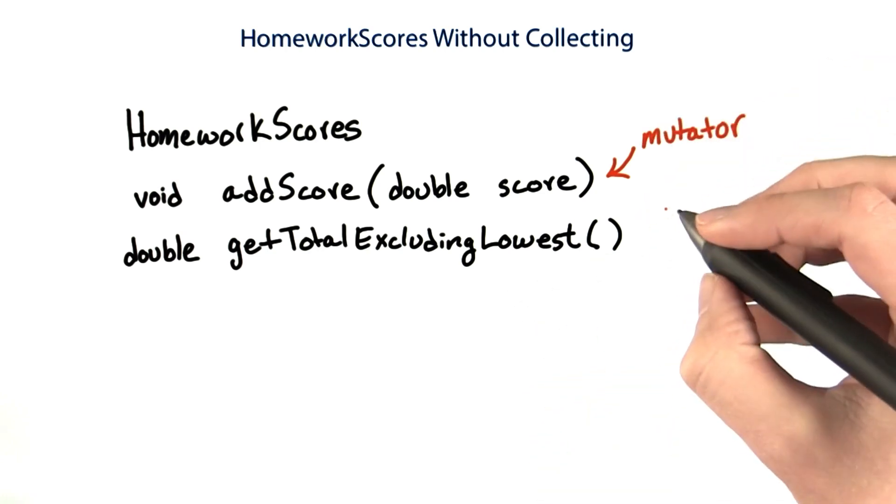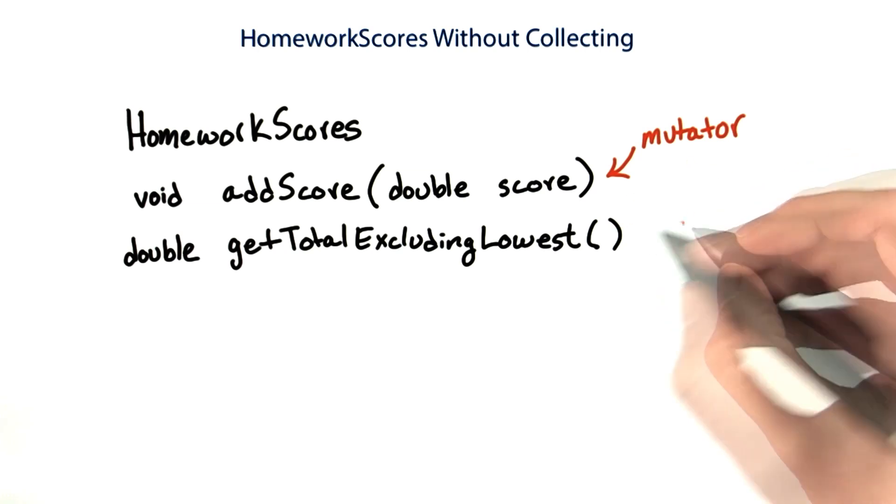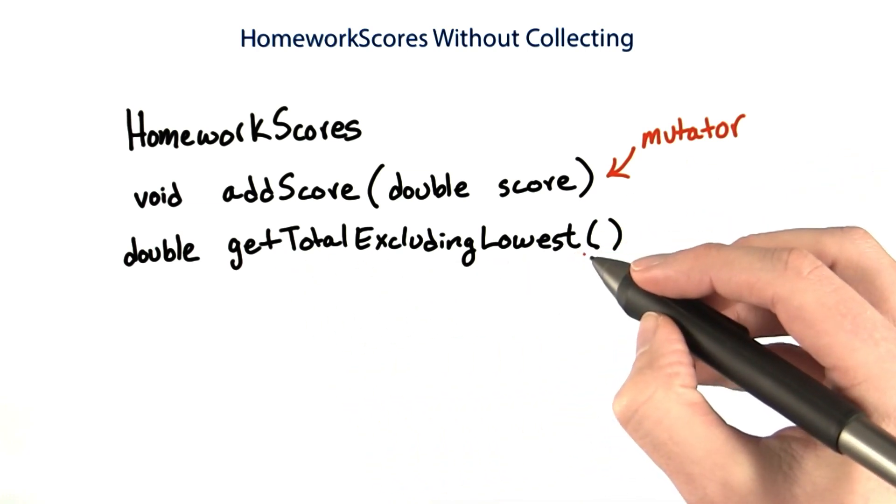In earlier lessons, we had a method for removing the minimum score. But in this version, we won't remove any. We'll just find a way to not count them when we're calculating the total.